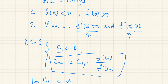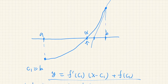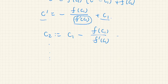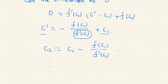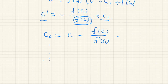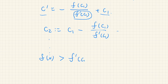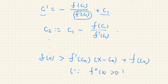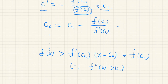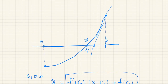Note that we haven't used the condition on f double prime yet — now we can use it. f double prime being positive means the function is convex, and a convex function means its tangent line is always below that function. So f of x is greater than any tangent line: f of x is greater than f prime of Cn times (x minus Cn) plus f of Cn. This is because f double prime of x is always positive.